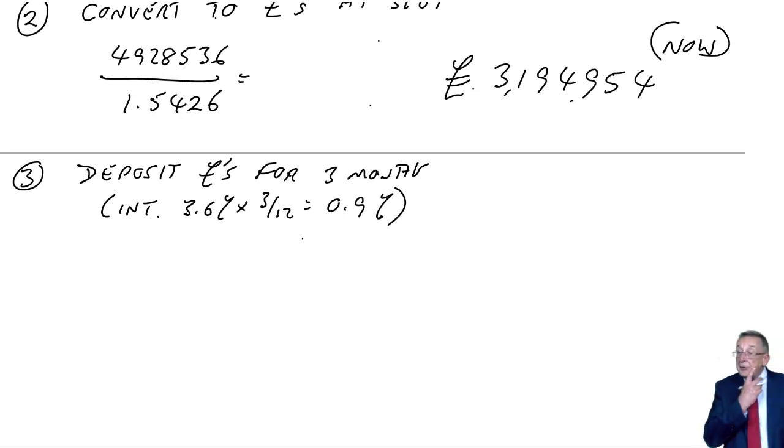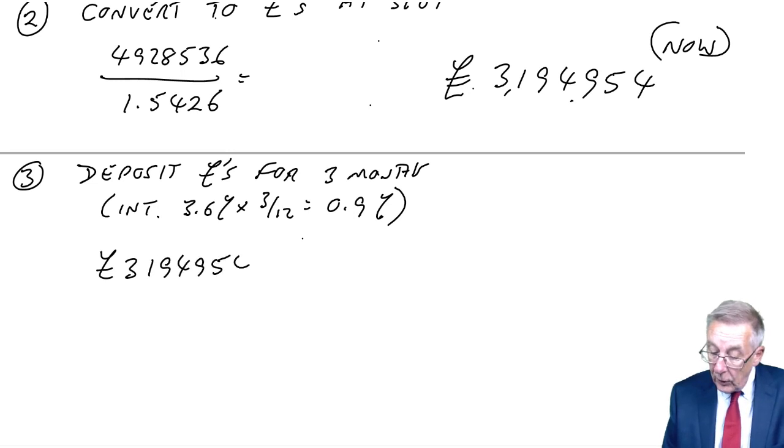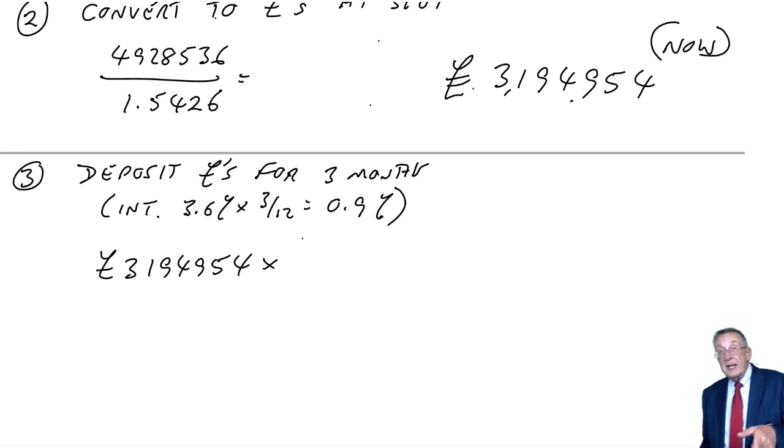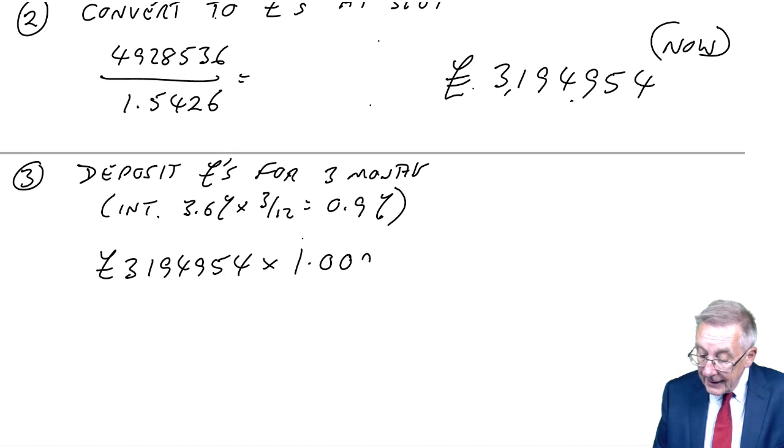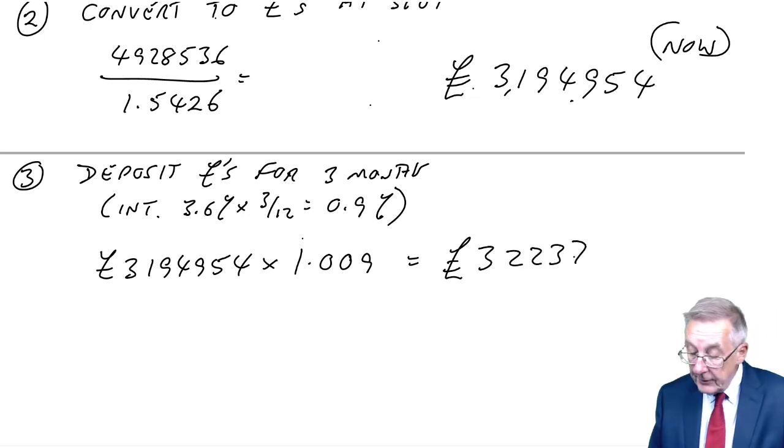So I'm going to put that three million on deposit for three months. How much will it grow to? 3,194,954 to add on interest, be careful, it's 0.9 of a percent. It's a bit less than one percent. Multiplied by 1.009, it will have grown to 3,194,954 times 1.009, which equals 3,223,709 pounds in three months.